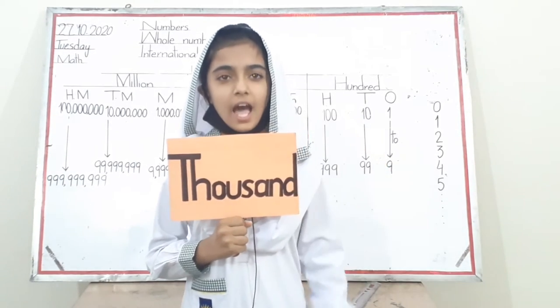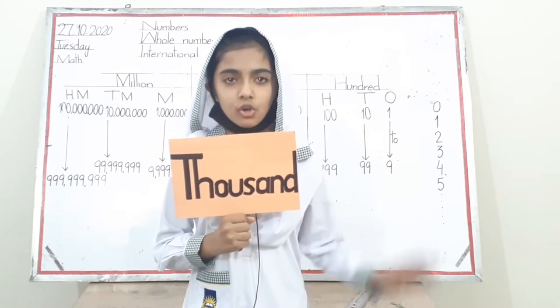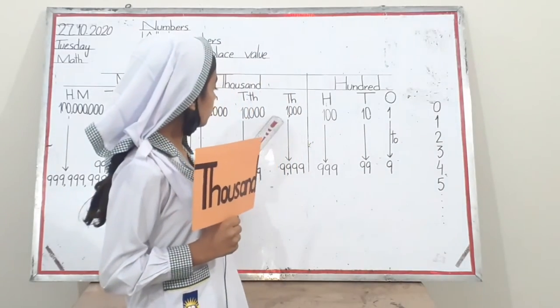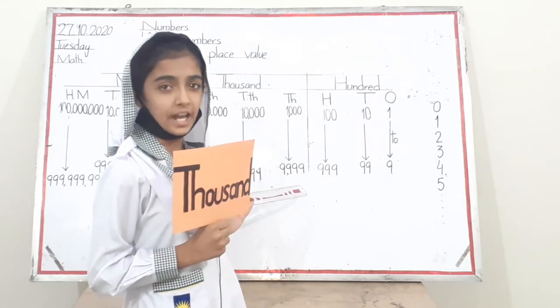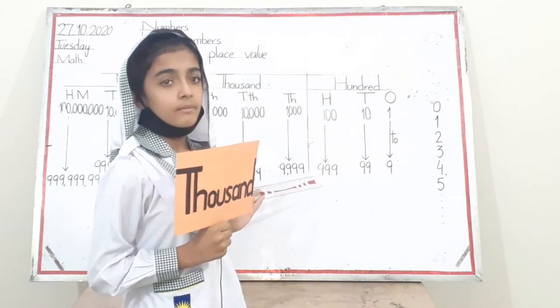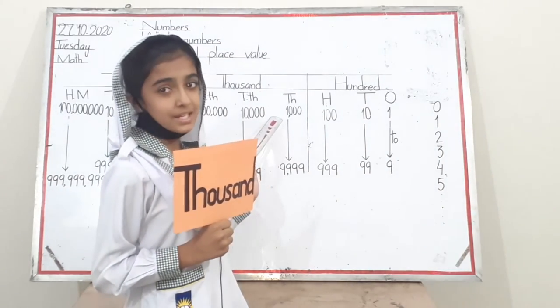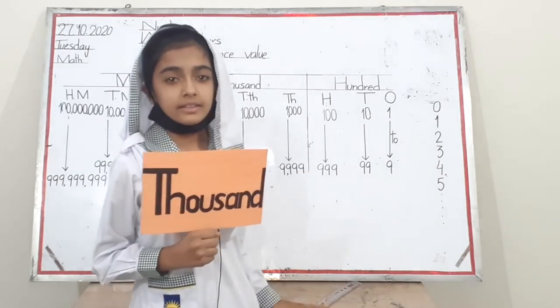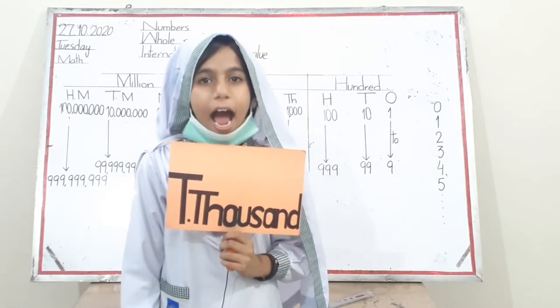Hi friends, I am thousand, a member of the thousand family. I show four digits, for example one thousand to nine thousand nine hundred and ninety-nine. My smallest number is one thousand and my biggest number is nine thousand nine hundred and ninety-nine. Thanks.